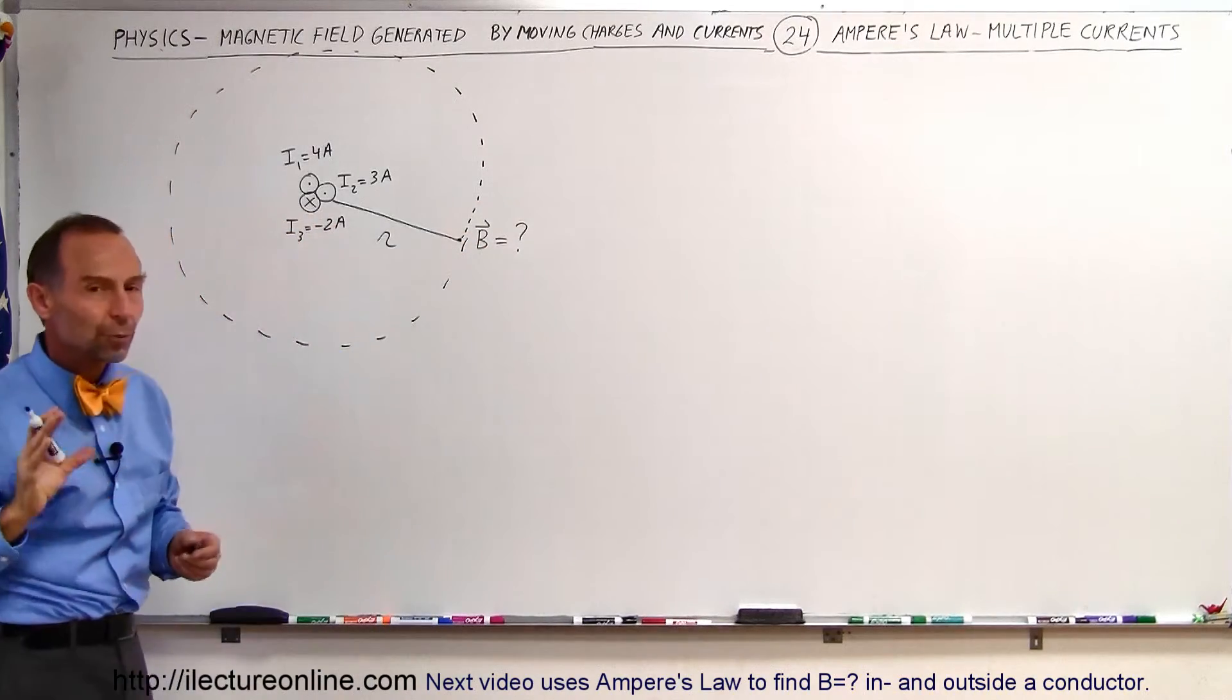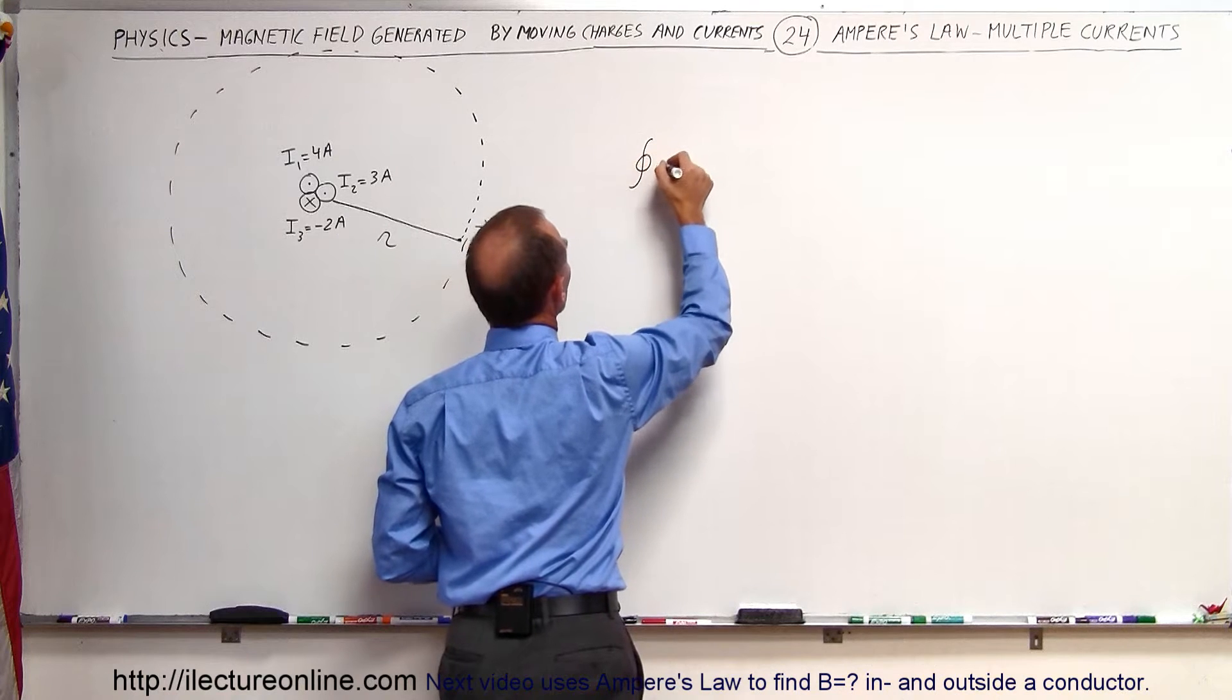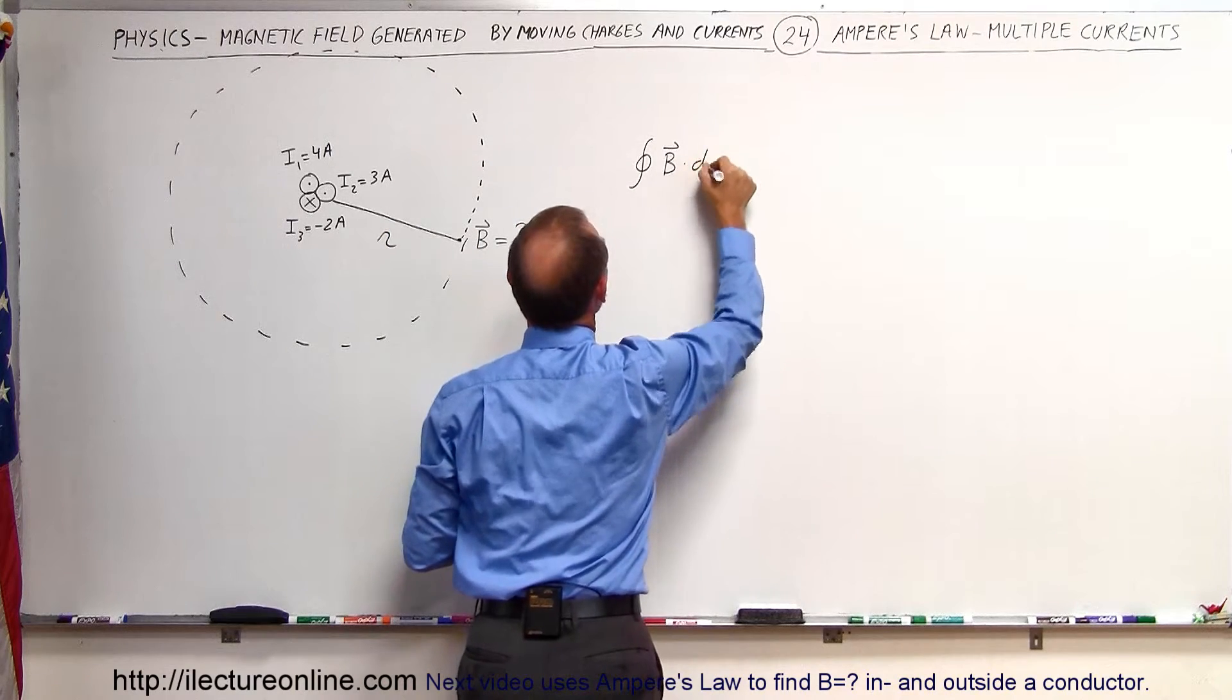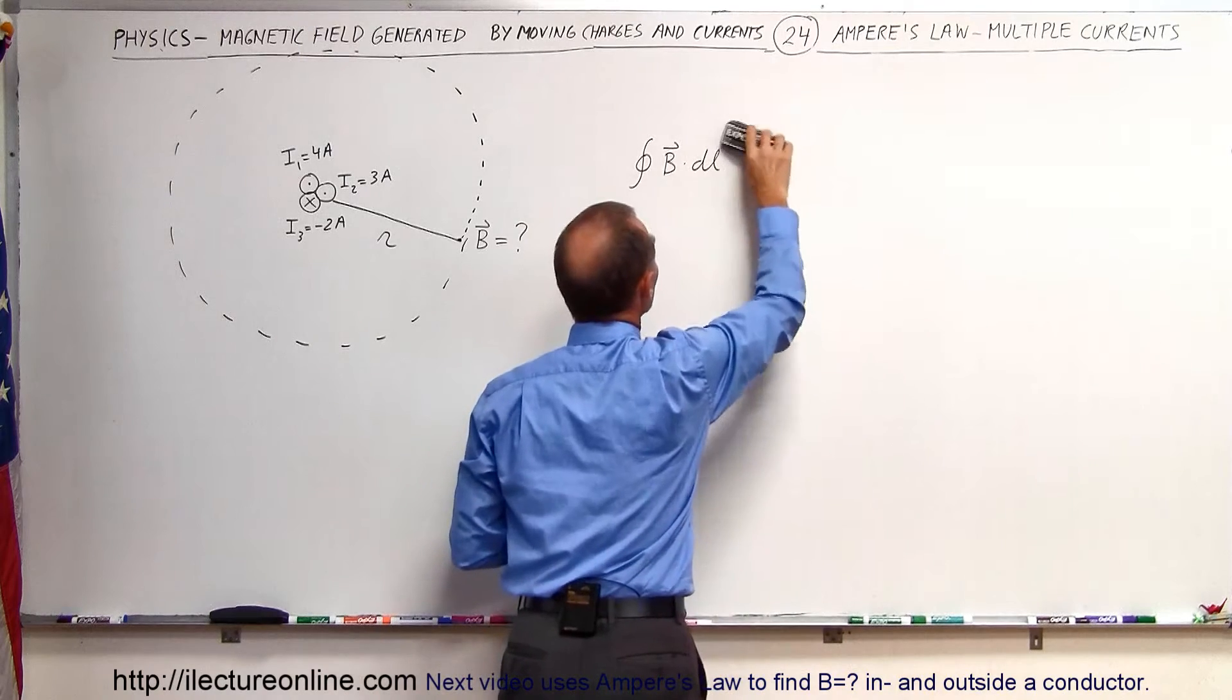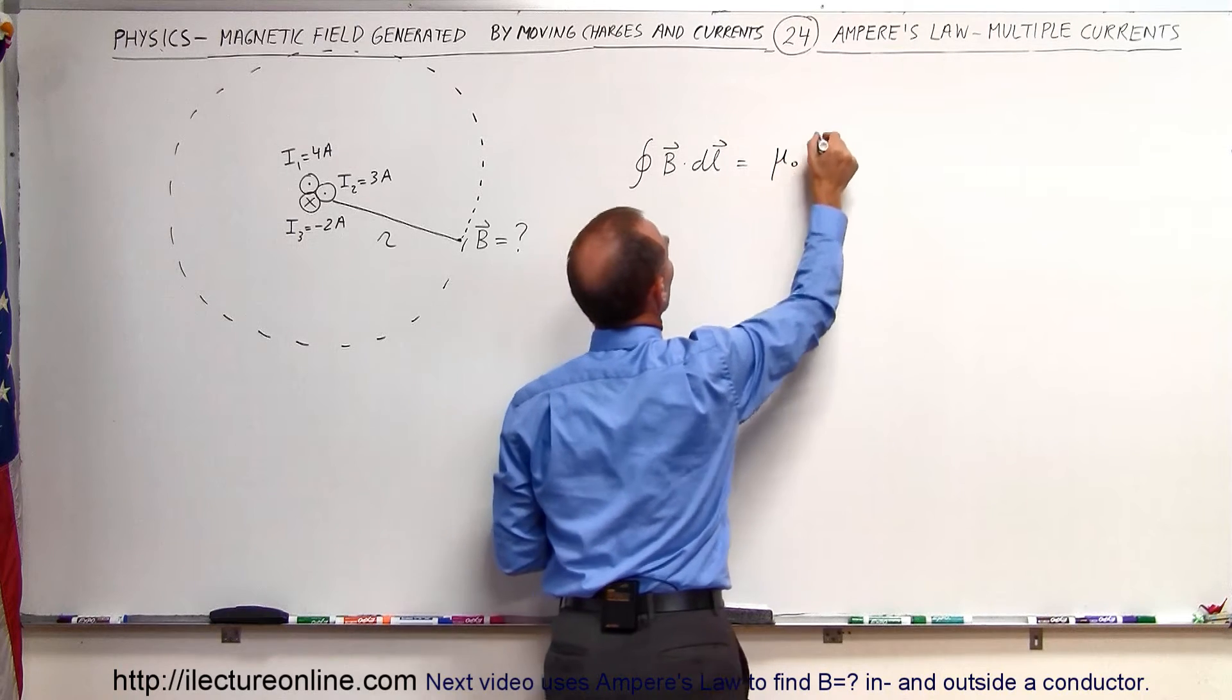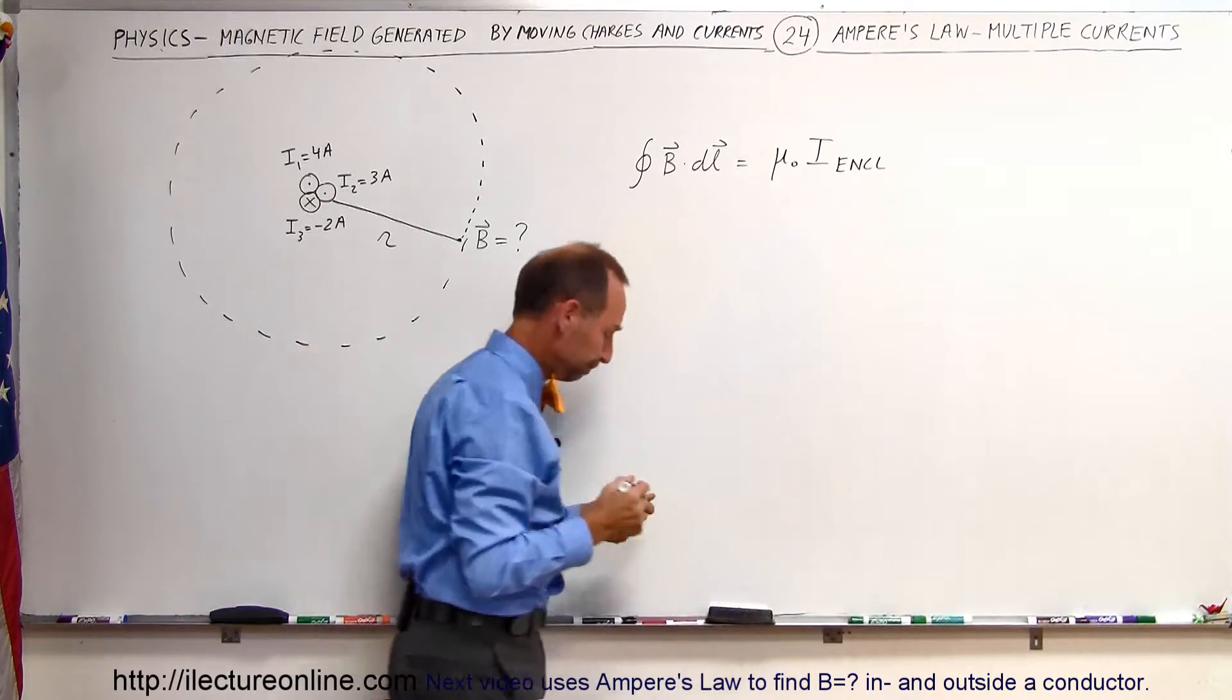And now we know from using Ampere's Law that the closed line integral of the strength of the magnetic field and the direction of the magnetic field on that line multiplied times the direction of the line segment, that is always going to be equal to mu sub nought times the total current enclosed by that loop integral.